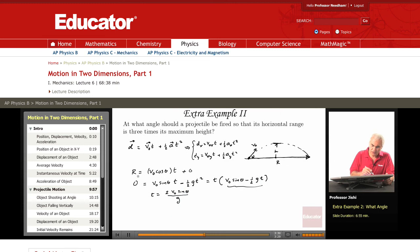So I can calculate the range now. The range is V0 cosine theta times this, so this is 2V0 squared cosine theta sine theta over G. That's the range.